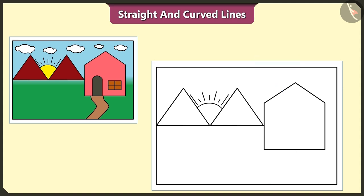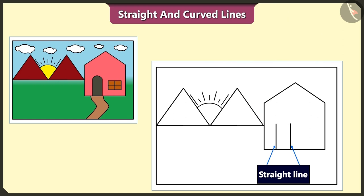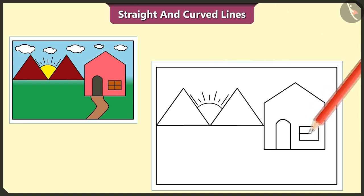Oh, we forgot to draw the door and the window of this house. Yes, let's draw. Let's draw a door by using two straight lines and one curved line, and draw this window using these six straight lines.